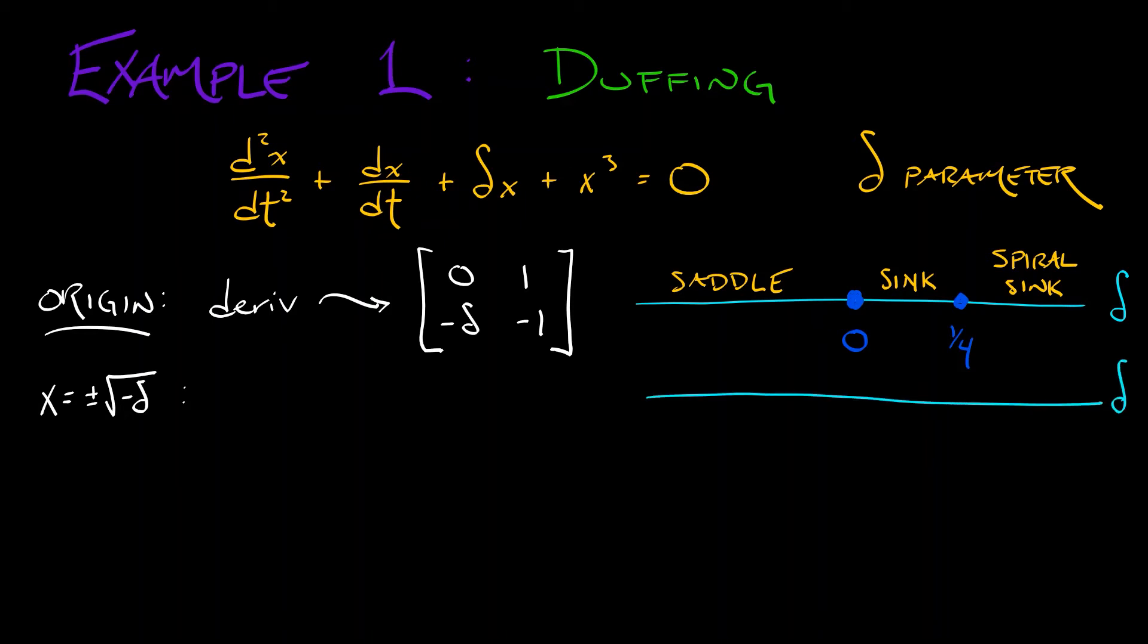Now go back and take a look at the analysis that we did in that earlier chapter, and what you will find is that based on the derivative evaluated at these two additional equilibria, which only exist when delta is negative, we have sinks. We have either sinks or spiral sinks depending on what side of negative one eighth delta is located.